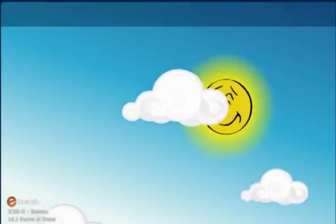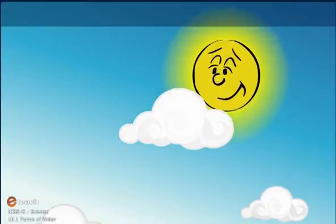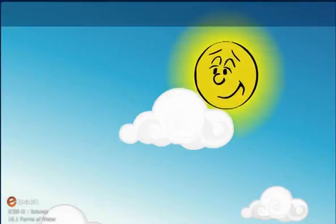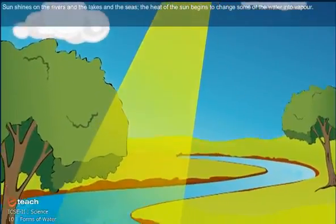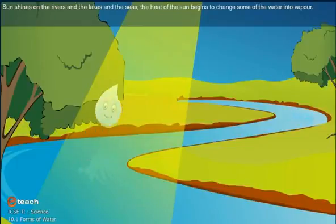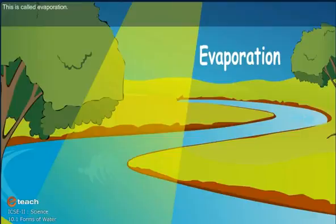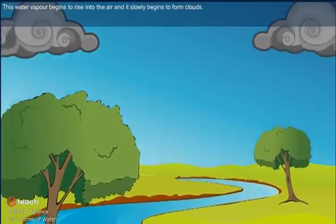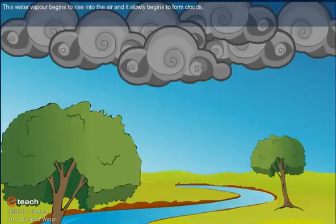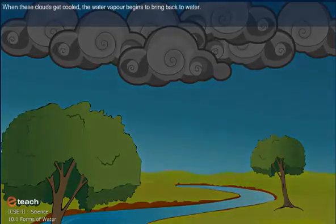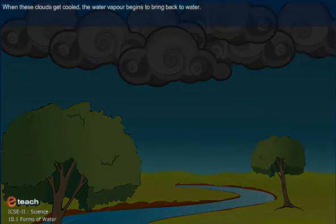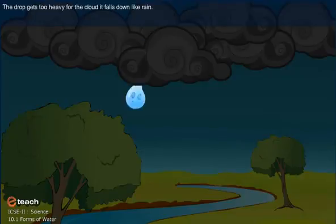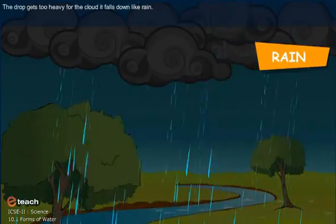Have you wondered how we get rain, and how rivers seem to always flow, and how the ocean has so much water? The sun shines on the rivers, lakes, and seas, and the heat of the sun begins to change some of the water into vapour — this is called evaporation. Water evaporates all the time. This water vapour rises into the air and slowly begins to form clouds. When these clouds get cooled, the water vapour begins to turn back to water.